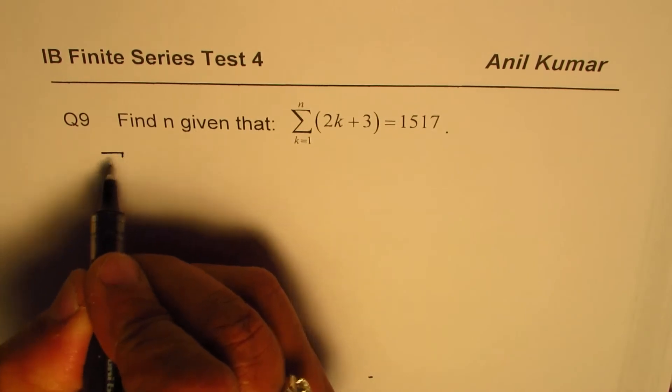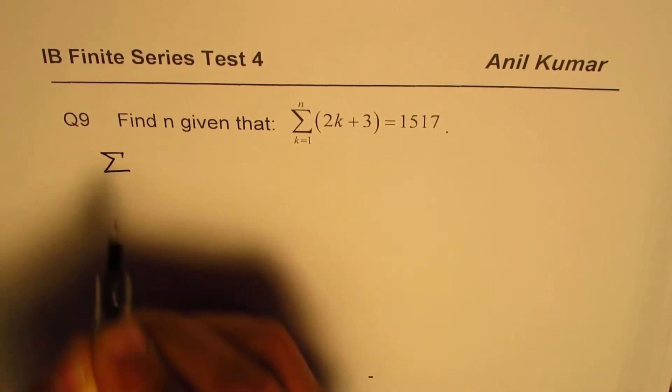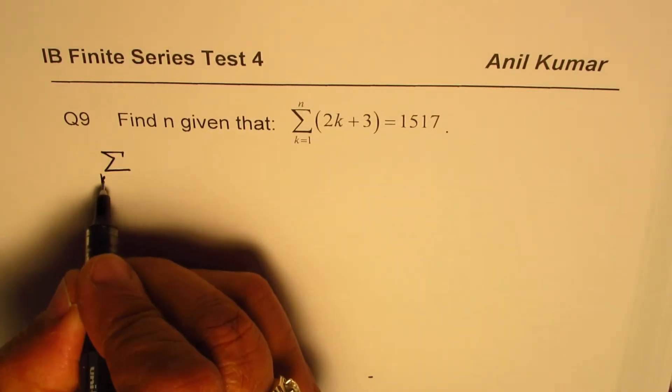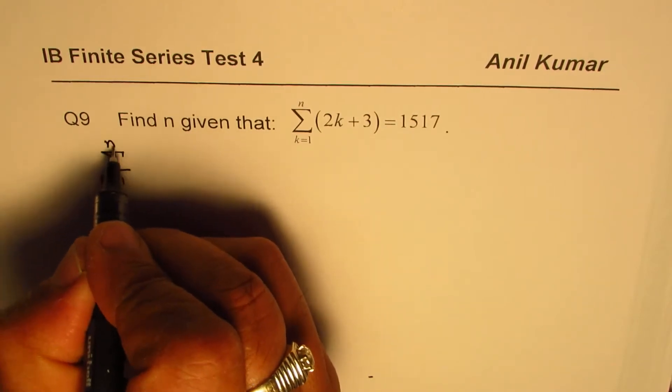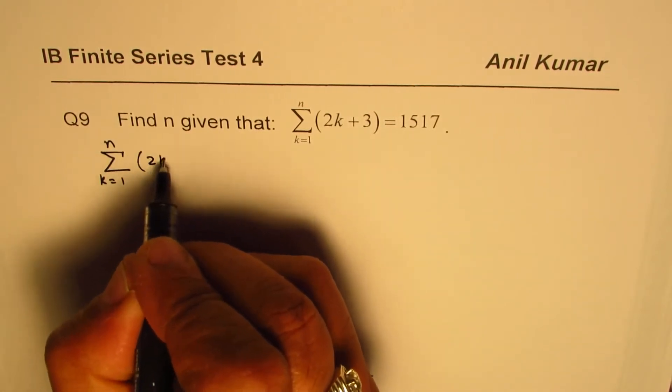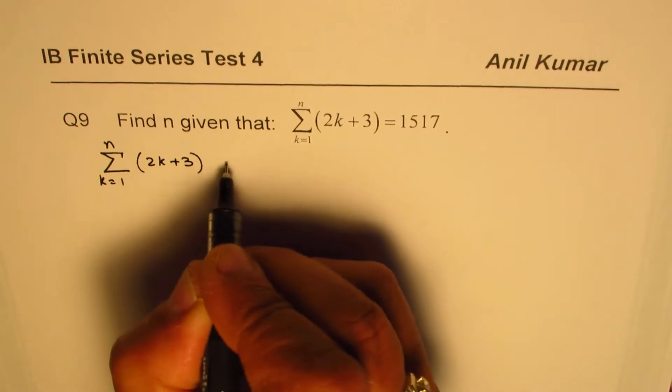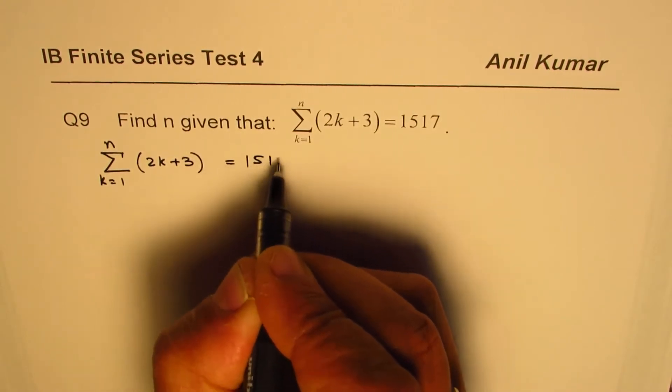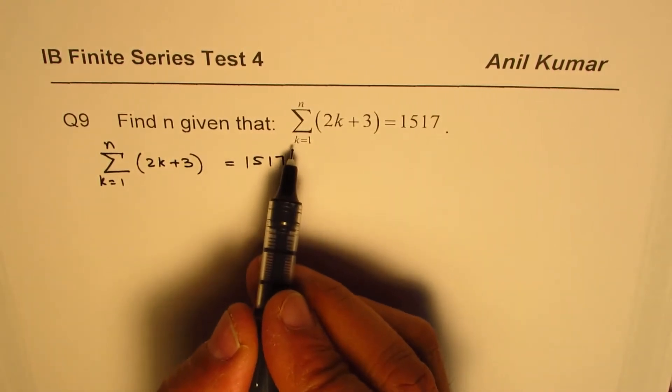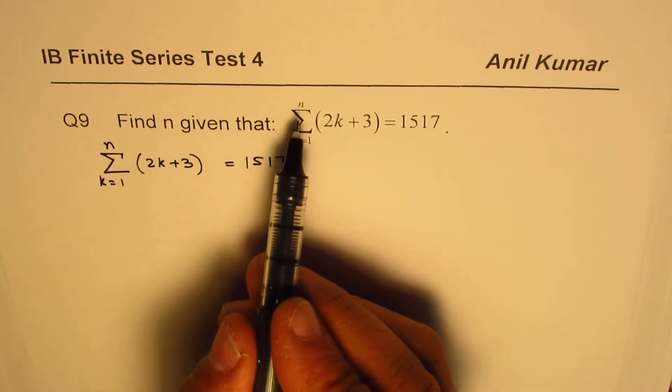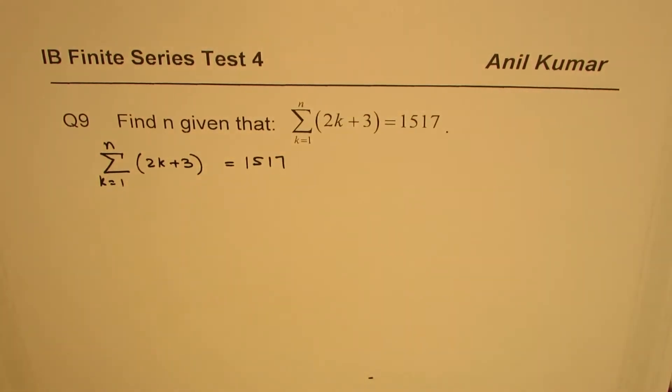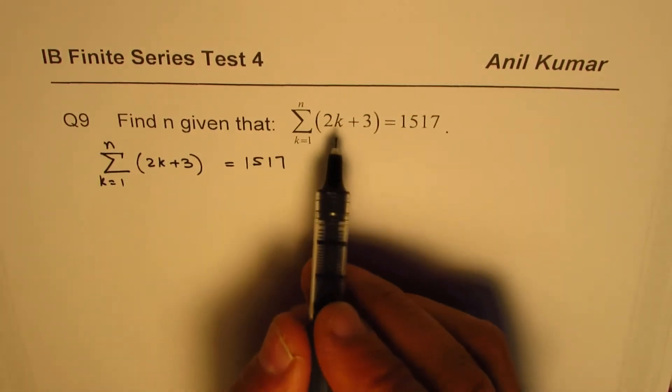Now here what we are given is that sum of n terms which is k equals 1 to n for 2k plus 3 is equals to 1517. We need to find the value of n. How many terms n will be there in this particular series?